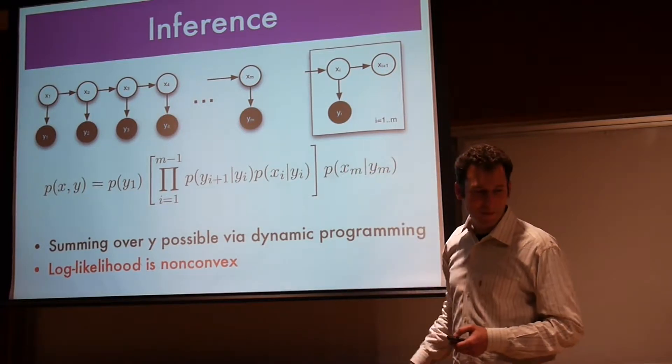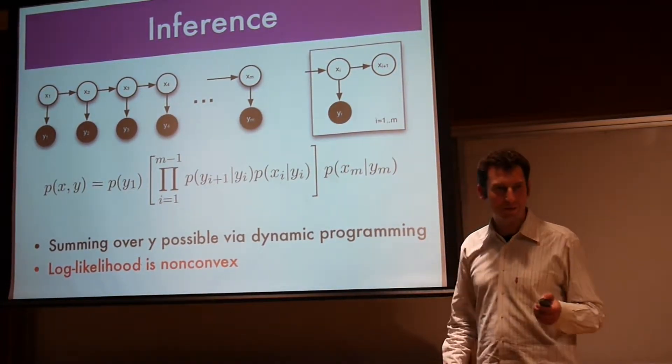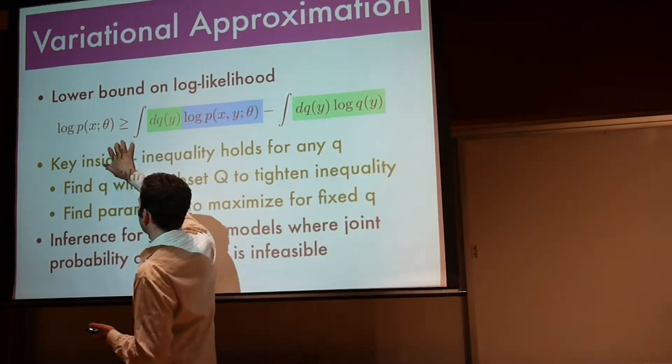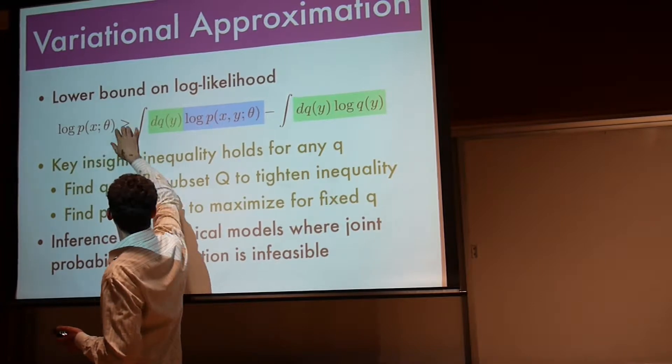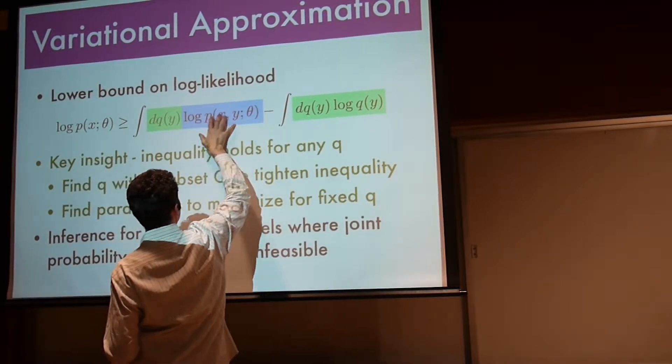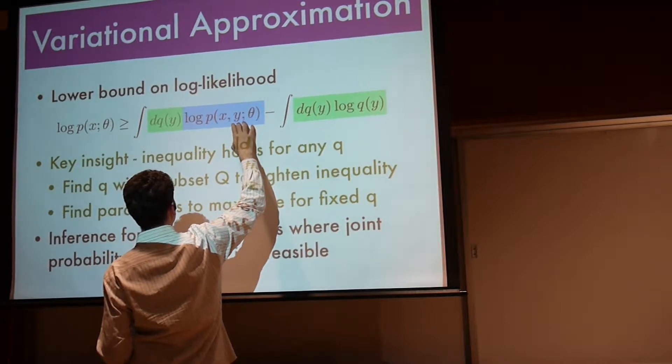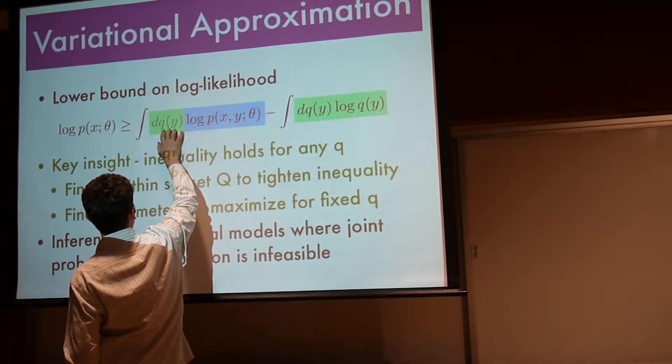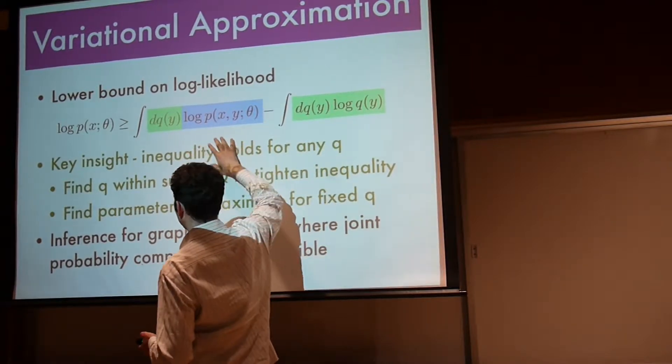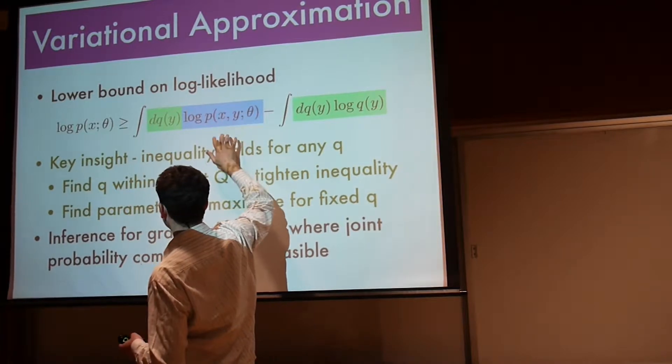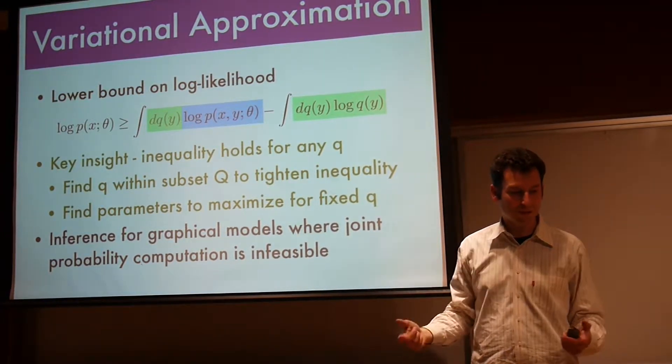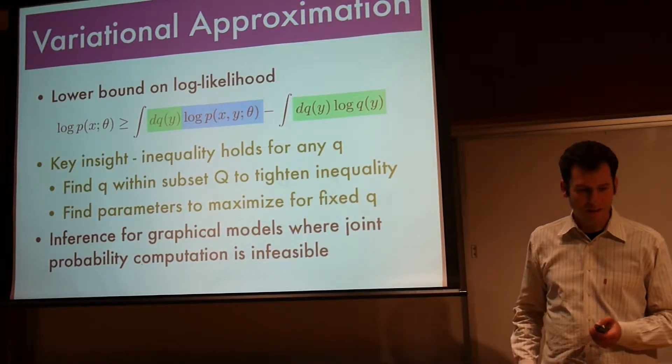In the case of hidden Markov models, the log likelihood is non-convex. So we just use variational approximation. This is what we already looked at last time. We can lower bound the integrated log likelihood by the expected log likelihood. The expression where we have both what we observed and what we thought would be the case with respect to some fantasy distribution minus entropy in this fantasy distribution.